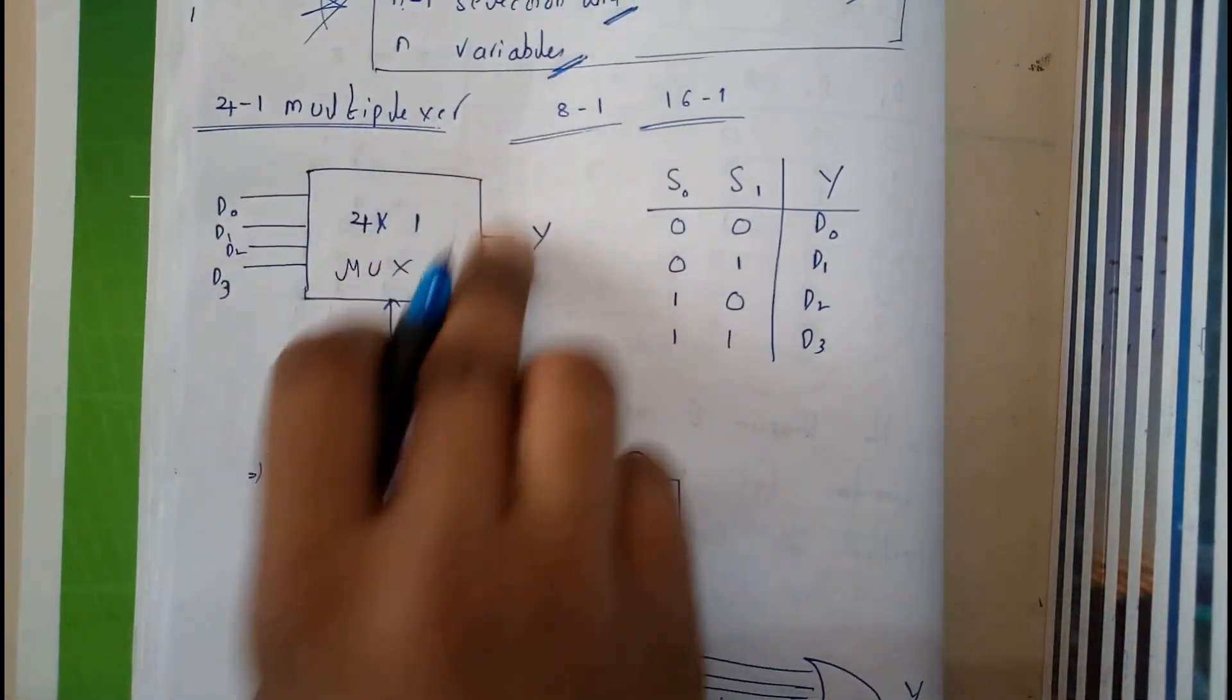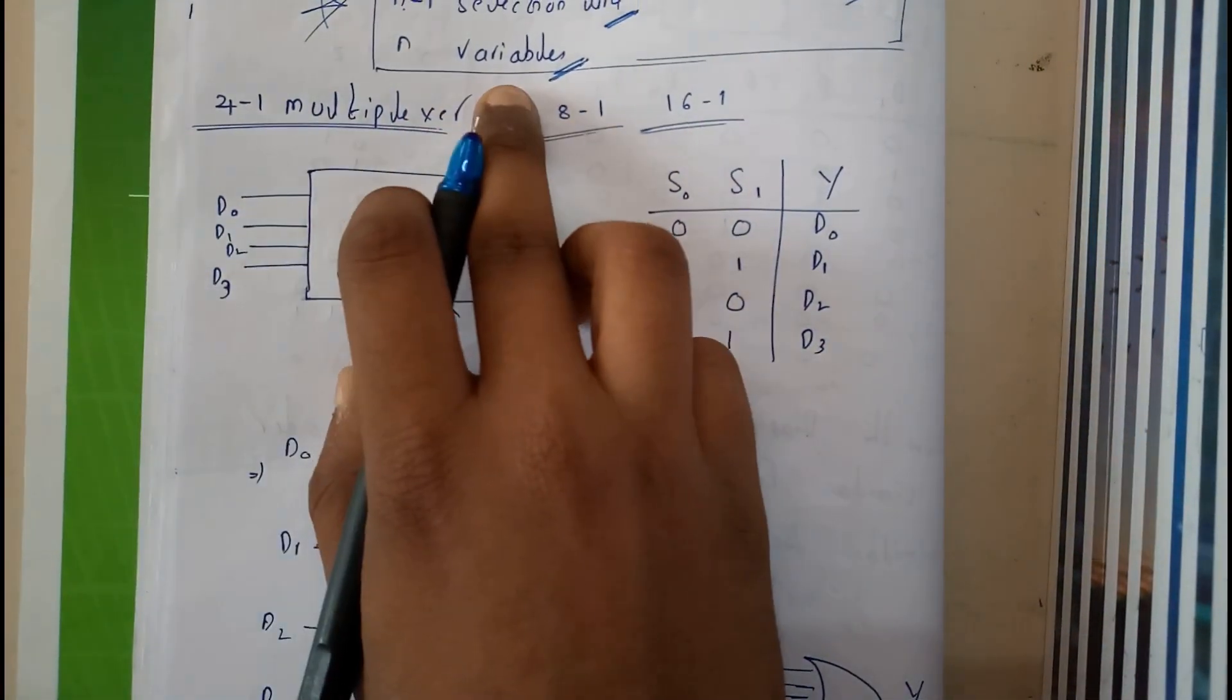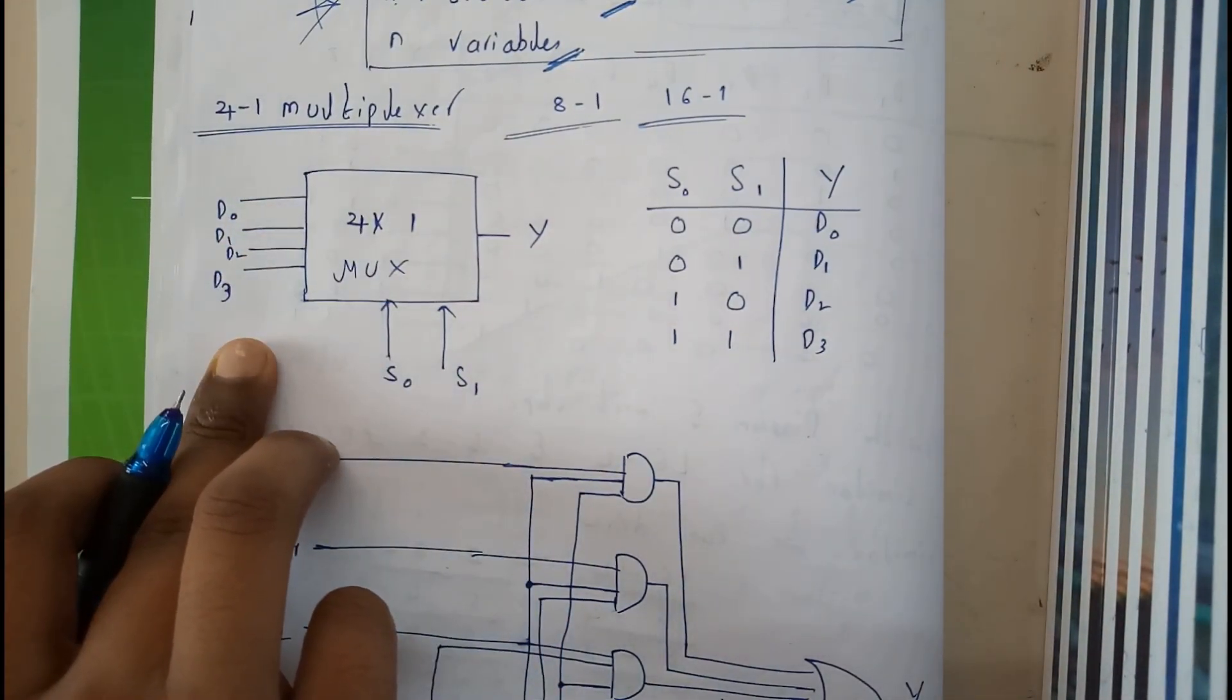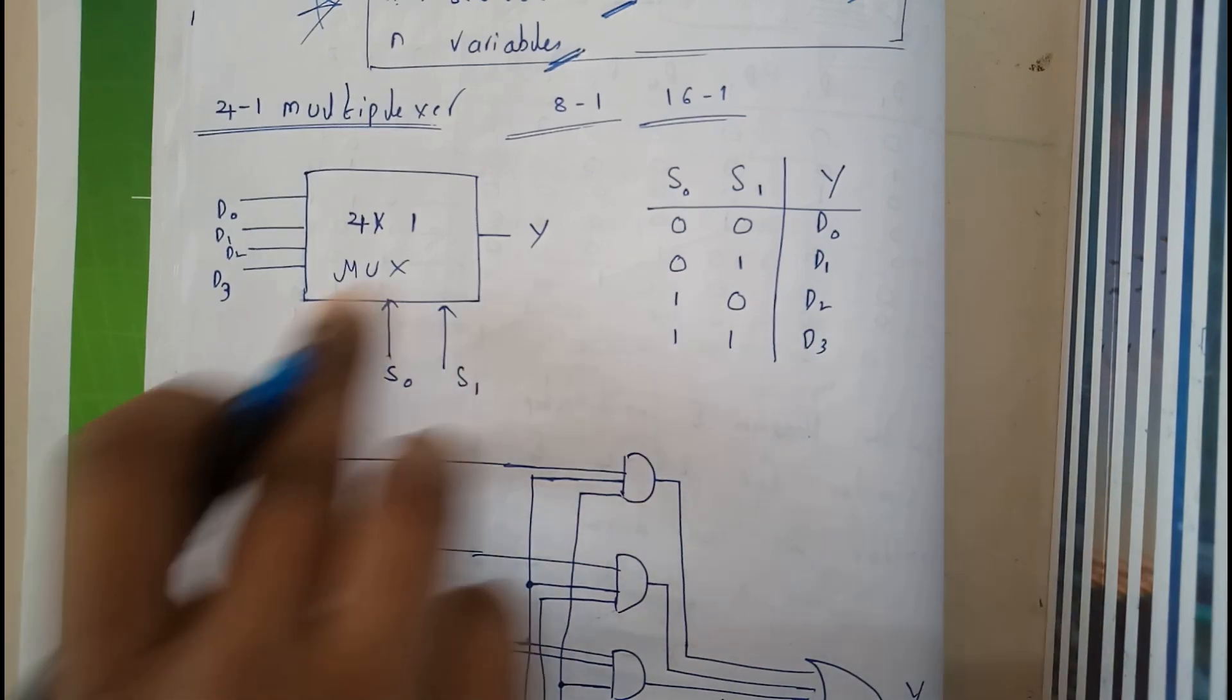It will be having 4 inputs, and it will be having n minus 1 selection lines and 1 output.